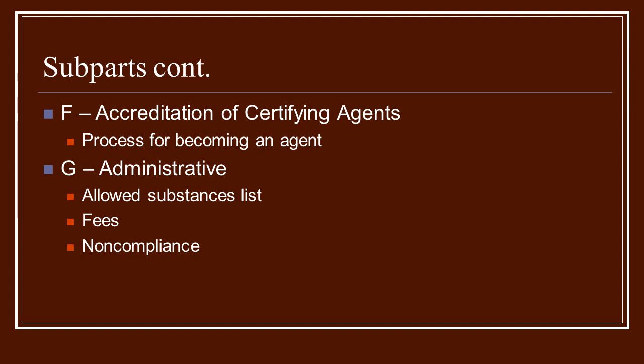Subparts F and G: Subpart F has all the rules and regulations for certifying agencies — the process of how to become an agent, what they need to follow, and the rules they need to abide by in order to certify farms. Subpart G is administrative and is sort of a catch-all. It contains the national list of allowed substances, which as a grower, producer, or handler you will get to know pretty well. If you ever have any question about whether something is okay to use on your farm, this is the list you'll go to.